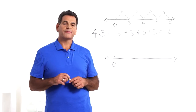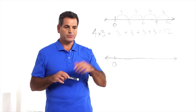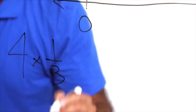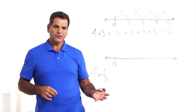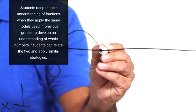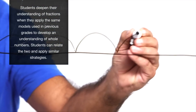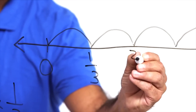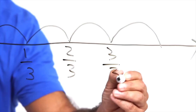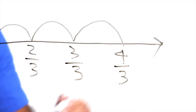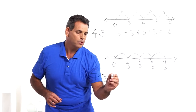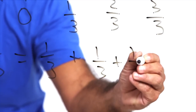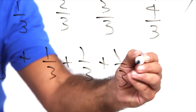Now let's look at multiplying a whole number by a fraction. Students can use the same strategy. Let's try four times one-third — this means four jumps of one-third. Drawing four jumps and labeling them: one-third, two-thirds, three-thirds, four-thirds. So the student can complete the equation: four times one-third equals one-third plus one-third plus one-third plus one-third equals four-thirds.